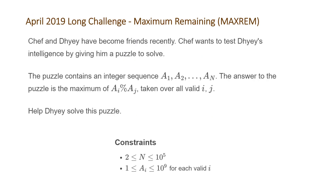The problem states Chef and DA have become friends recently. Chef wants to test DA's intelligence by giving him a puzzle to solve. The puzzle contains an integer sequence a1 to an. The answer to the puzzle is the maximum of the i-th element modulus the j-th element taken over all valid i and j's. The constraints are: n will be between 2 and 10^5, and each element's value will be between 1 and 10^9.